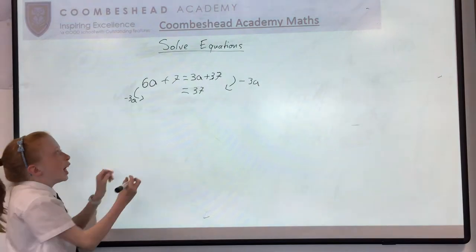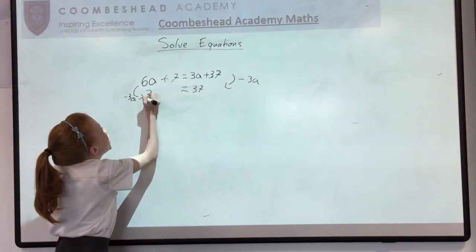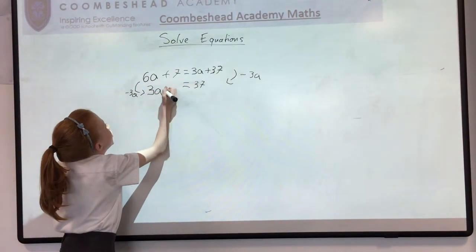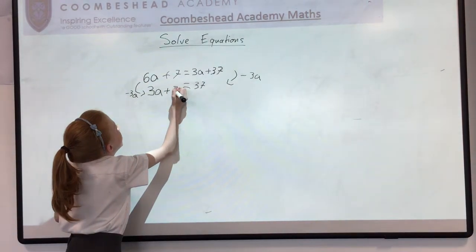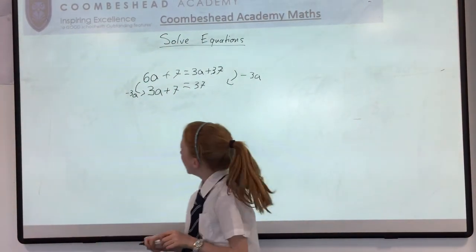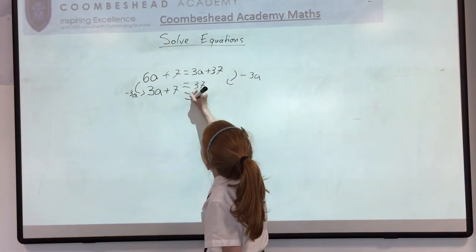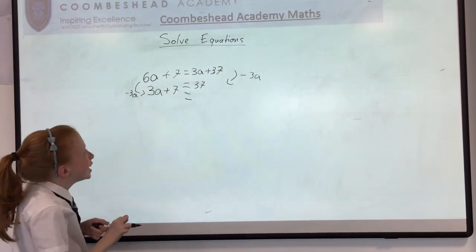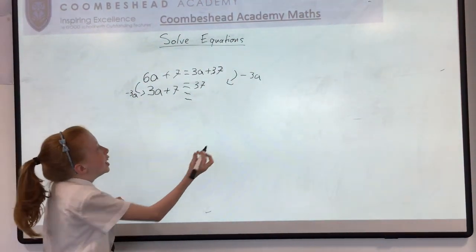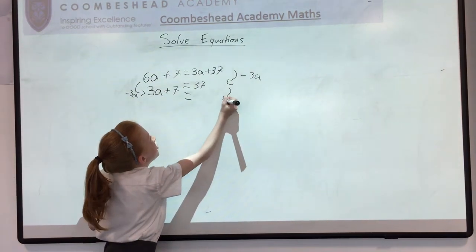And the inverse on this side would leave us with 3a plus 7. And then we do our next equal sign, and the next inverse is taking away the 7 from both sides.